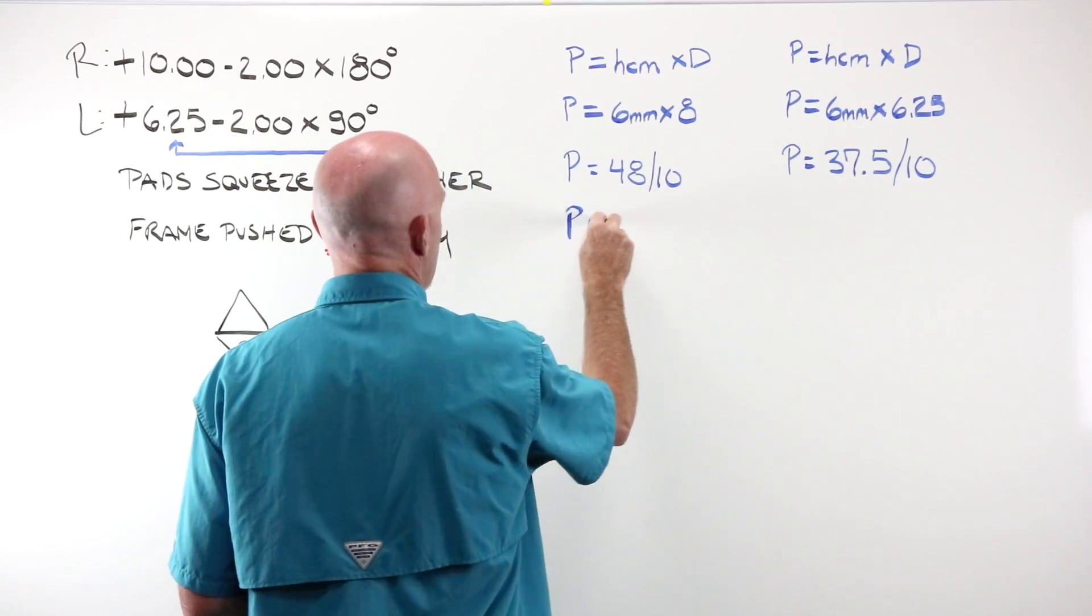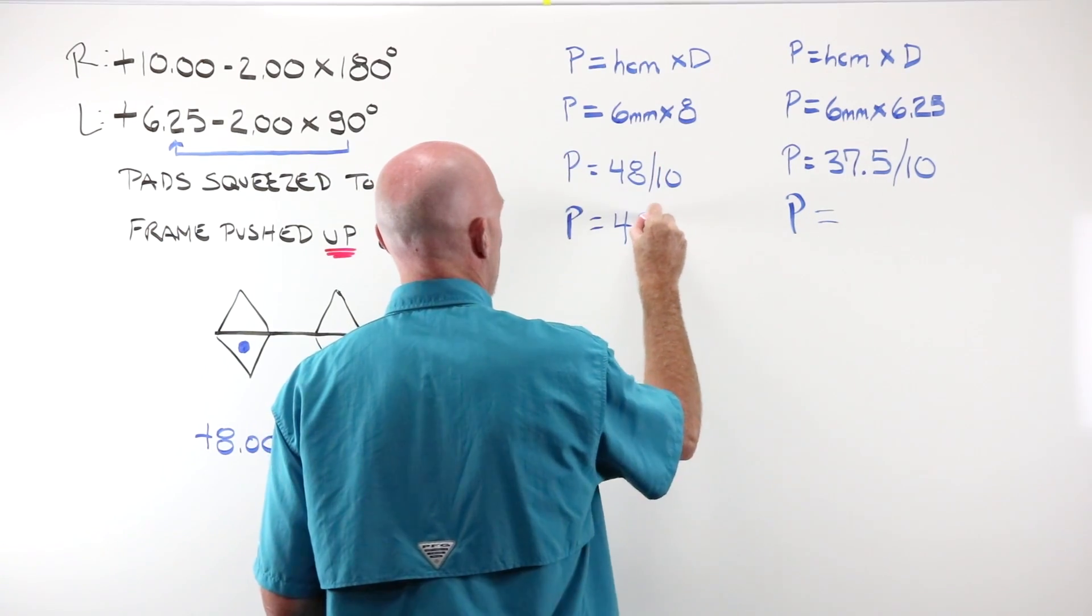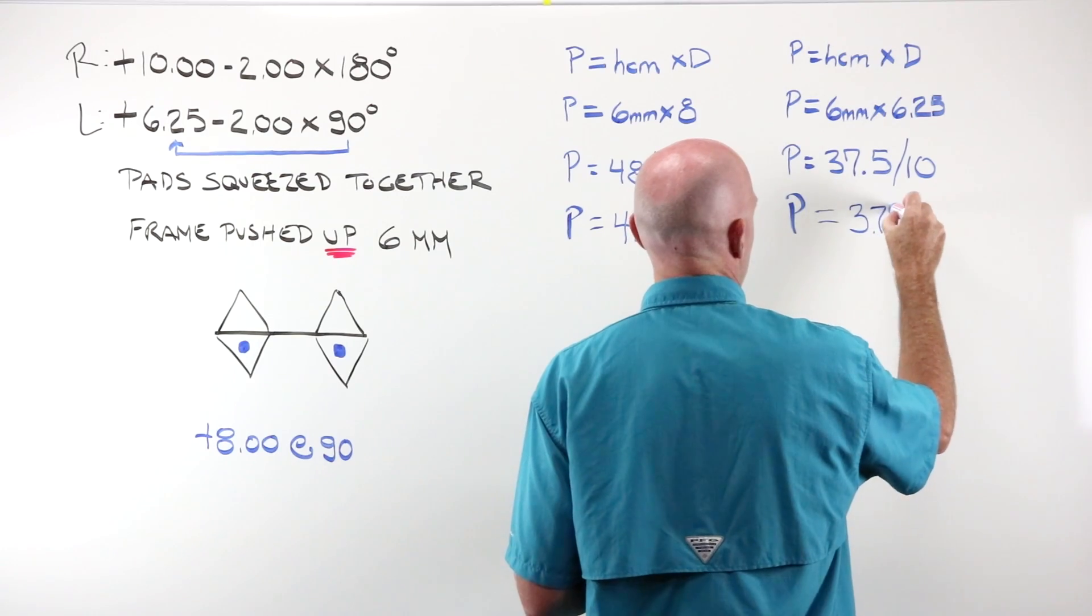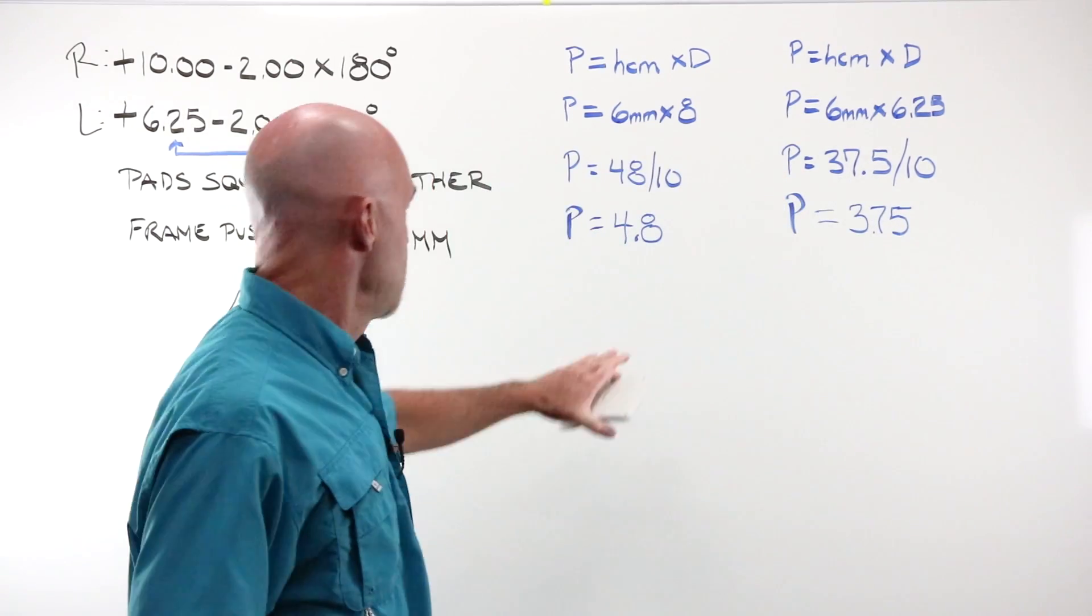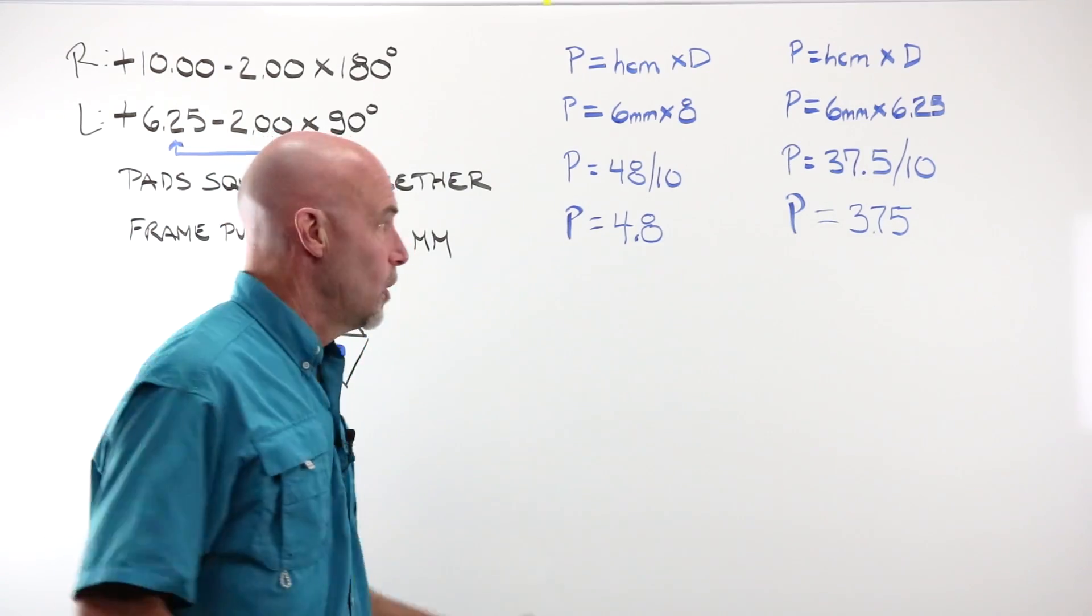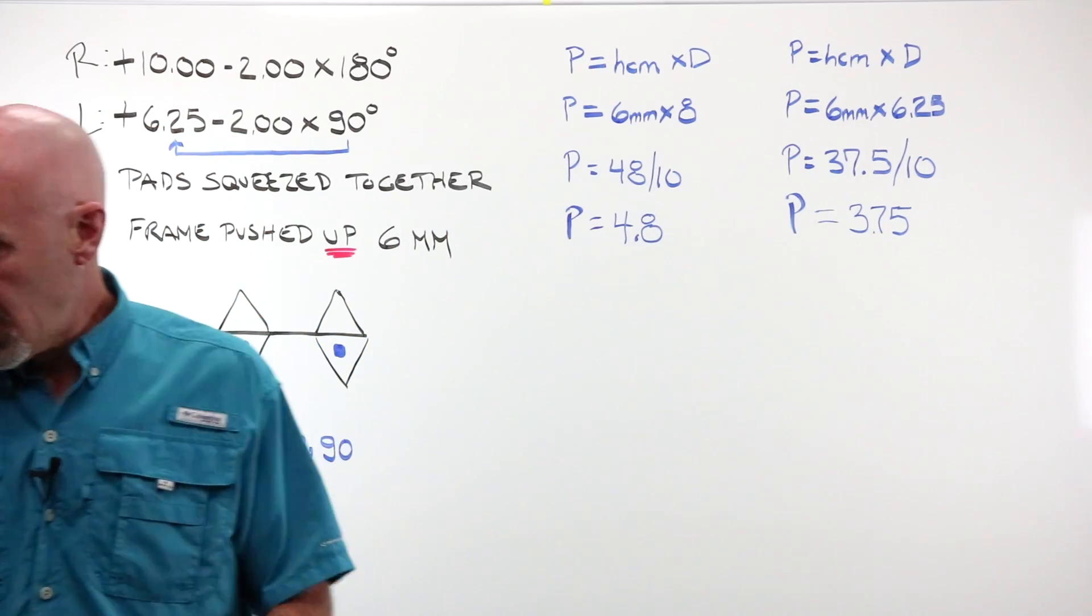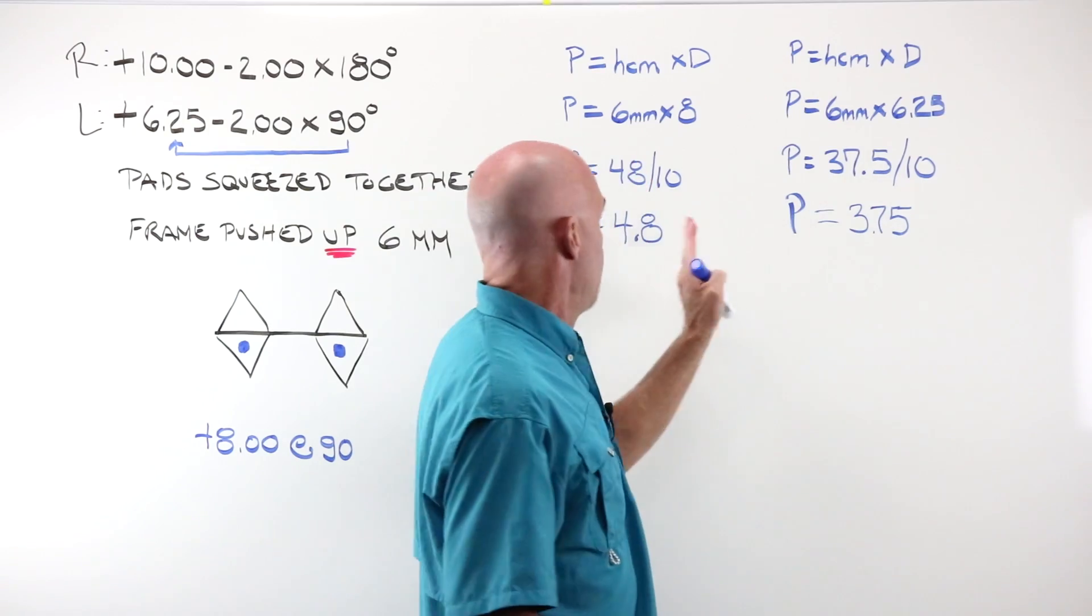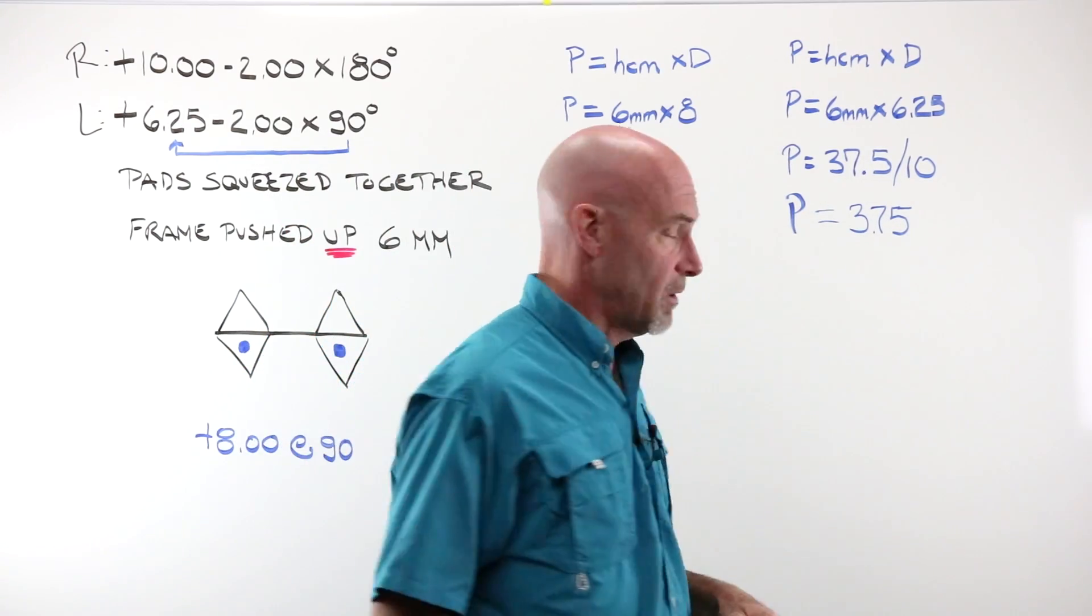P is equal to 4.8 and 3.75. That is the amount of prism being created in each eye. The two eyes work together and depending on the position of the prisms, the power, the minus, the plus, they either subtract from each other or they add to each other.